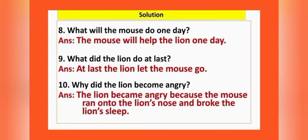Number eight: What will the mouse do one day? The mouse will help the lion one day. Number nine: What did the lion do at last? At last, the lion let the mouse go. Number ten: Why did the lion become angry? The lion became angry because the mouse ran onto the lion's nose and broke the lion's sleep.